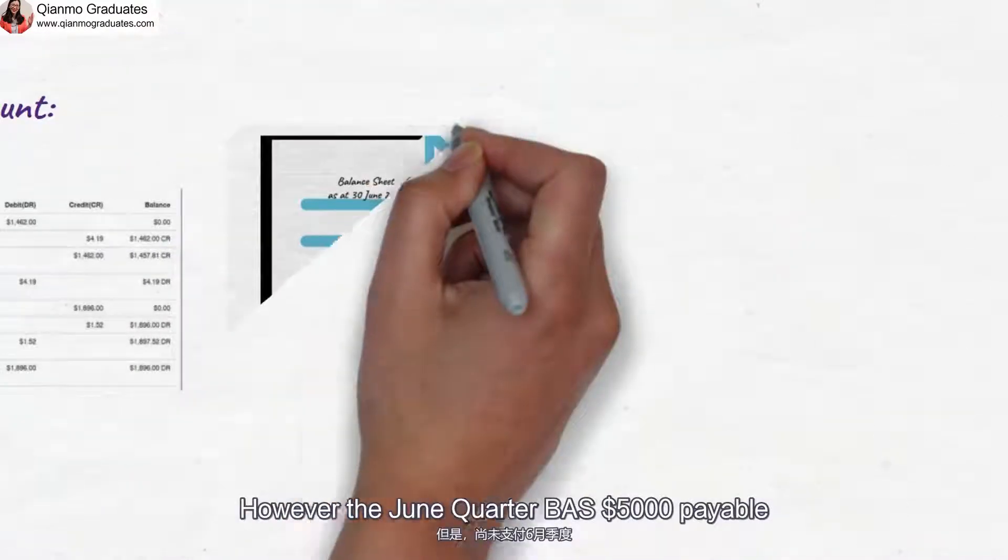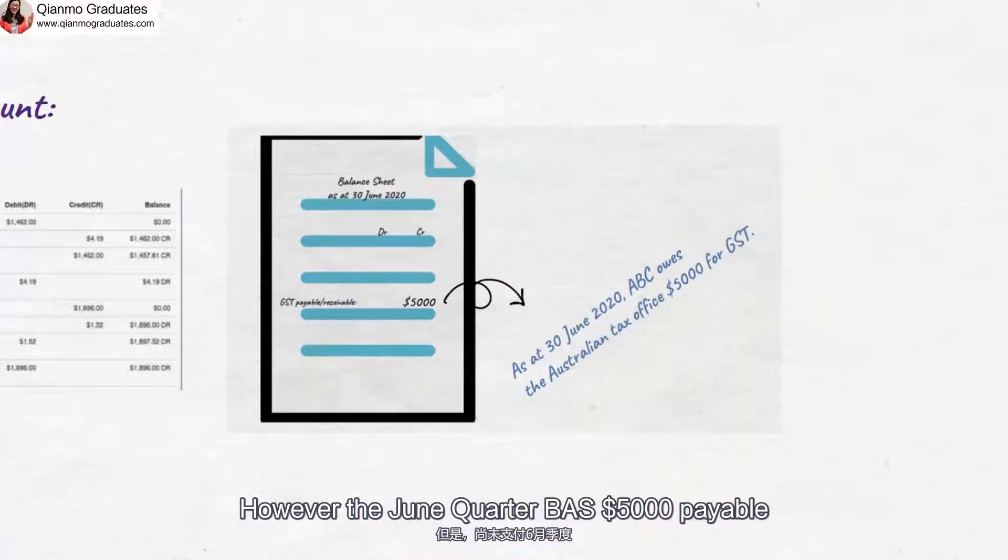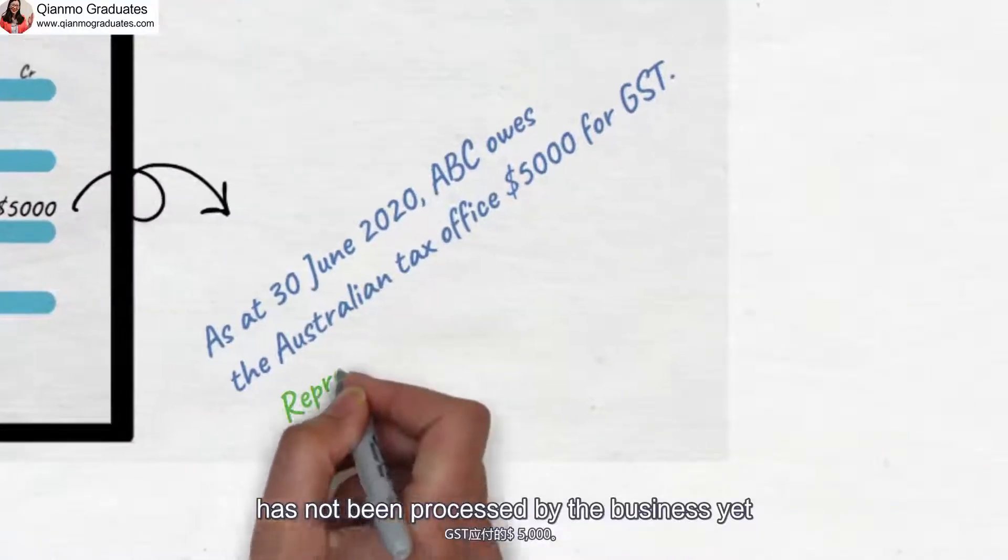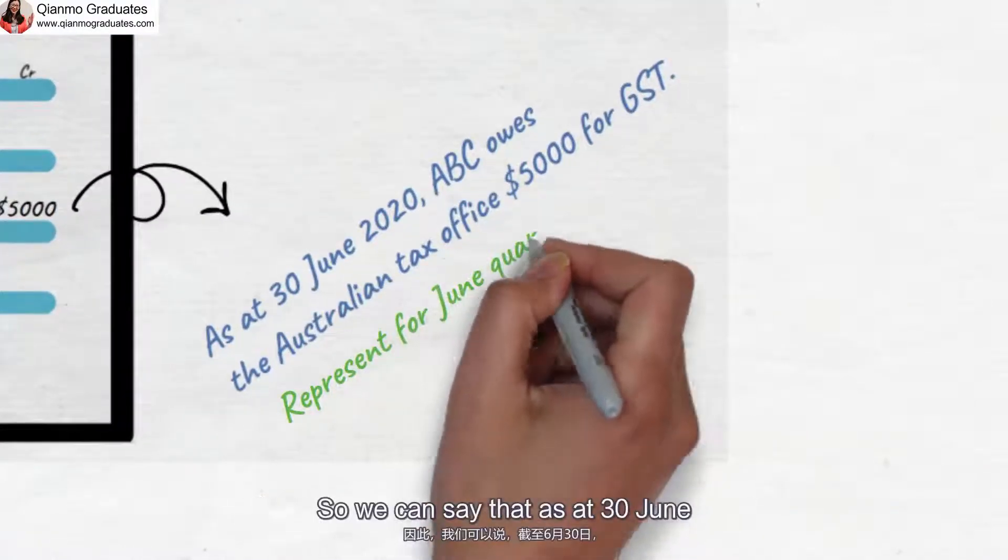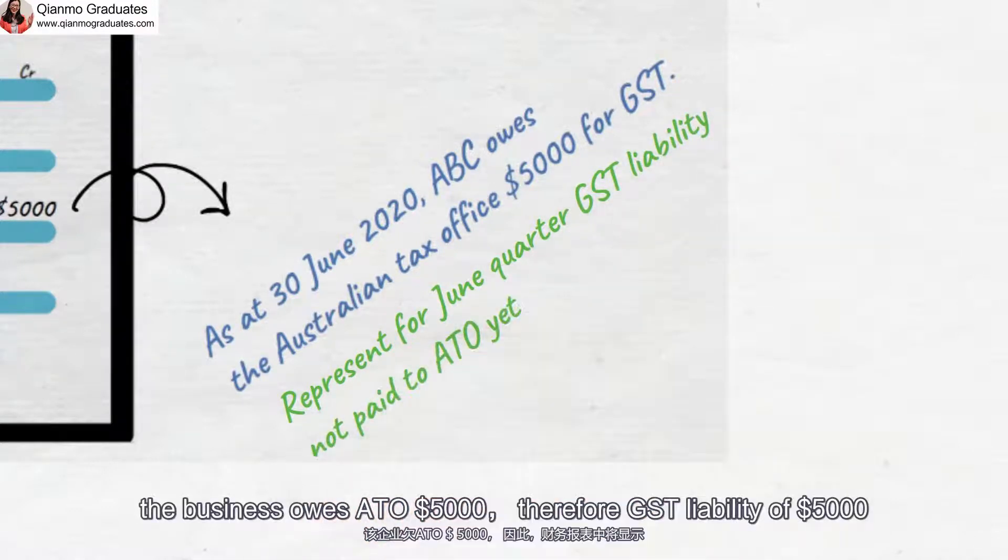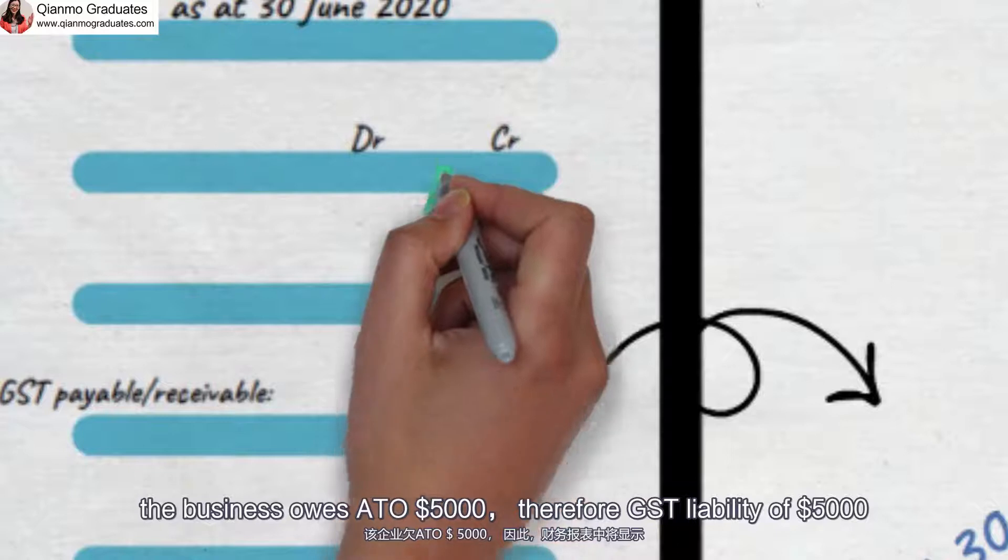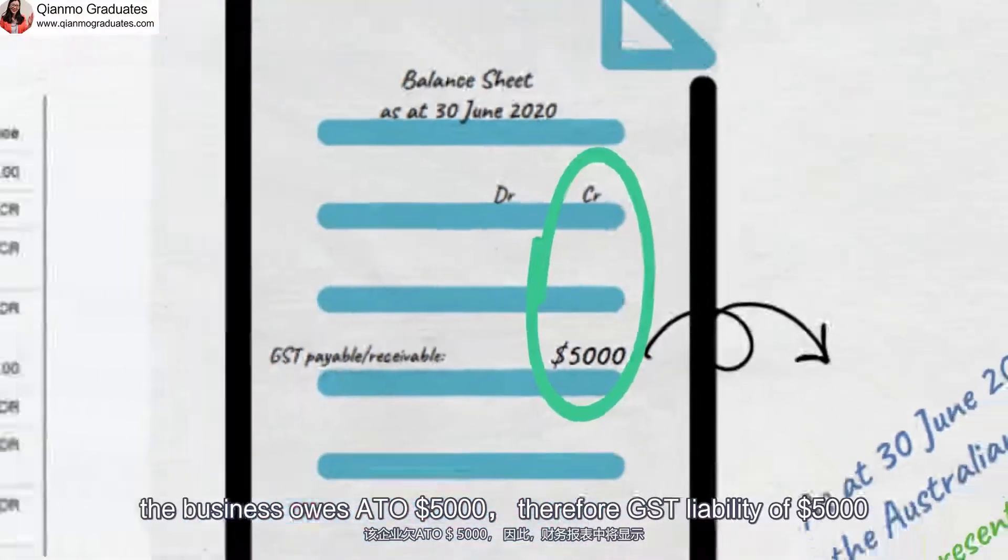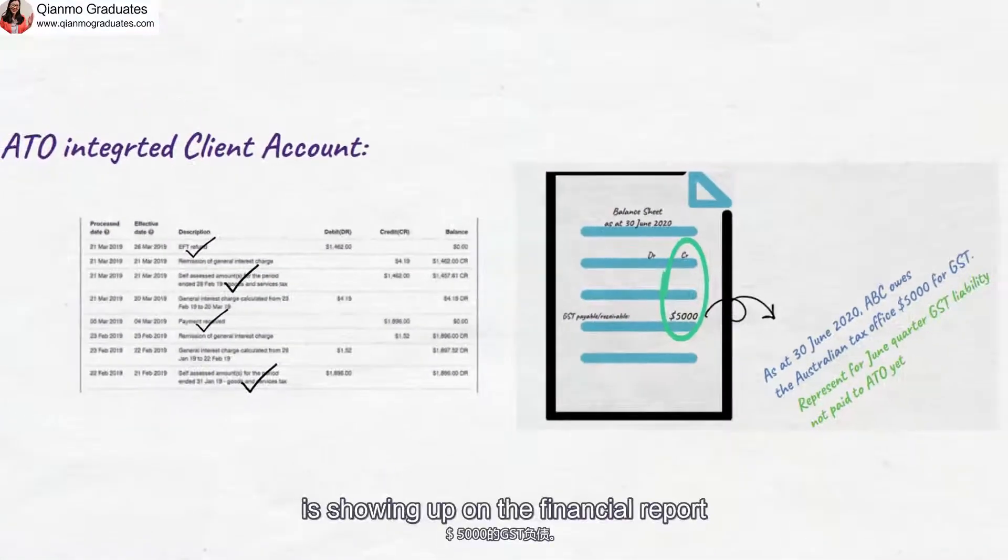However, the June quarter BATS 5000 dollars payable has not been processed by the business yet. So, we can say that as at 30th June, the business owes ATO 5000 dollars. Therefore, GST liability of 5000 dollars is showing up on the financial report.